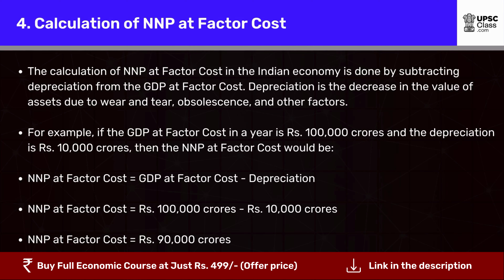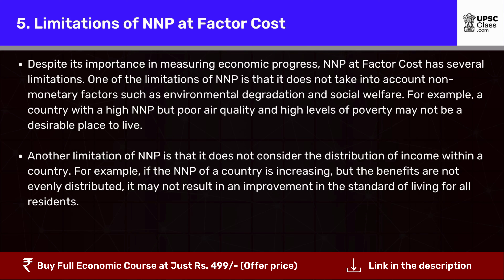Calculation of NNP at Factor Cost in the Indian Economy. The calculation is done by subtracting depreciation from the GDP at Factor Cost. Depreciation is the decrease in the value of assets due to wear and tear, obsolescence, and other factors. For example, if the GDP at Factor Cost in a year is Rs. 100,000 crores and depreciation is Rs. 10,000 crores, then NNP at Factor Cost equals Rs. 90,000 crores.